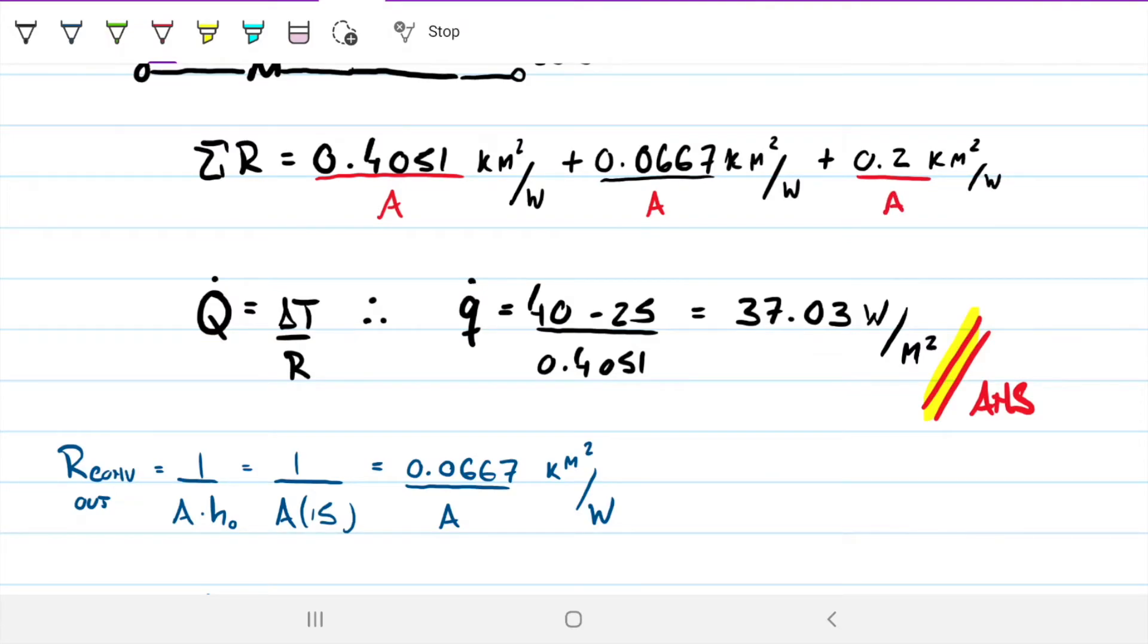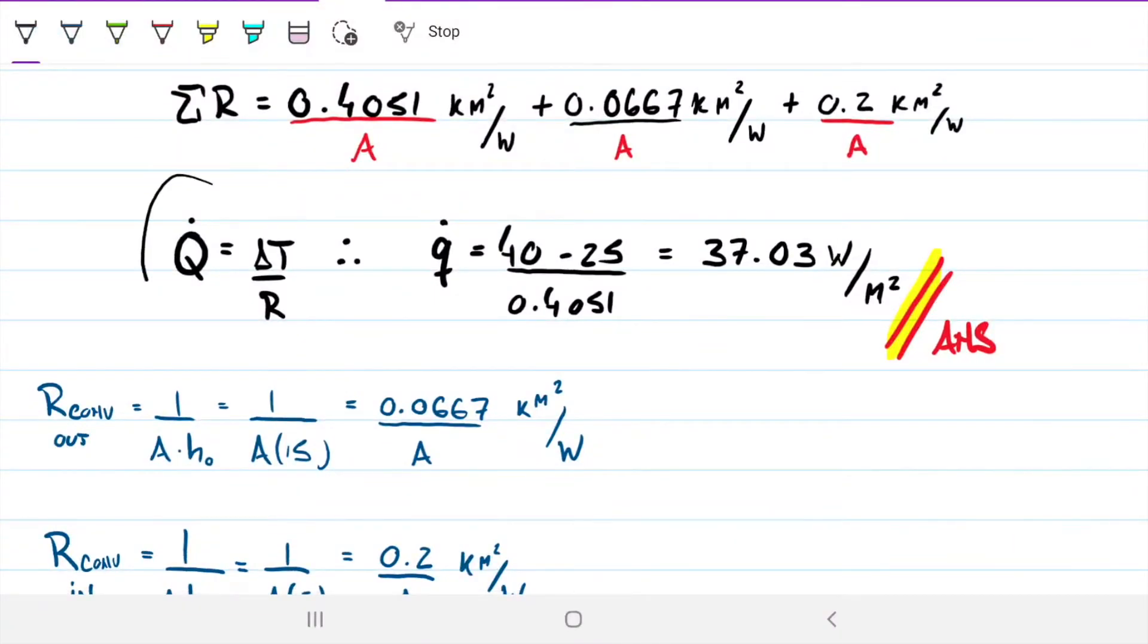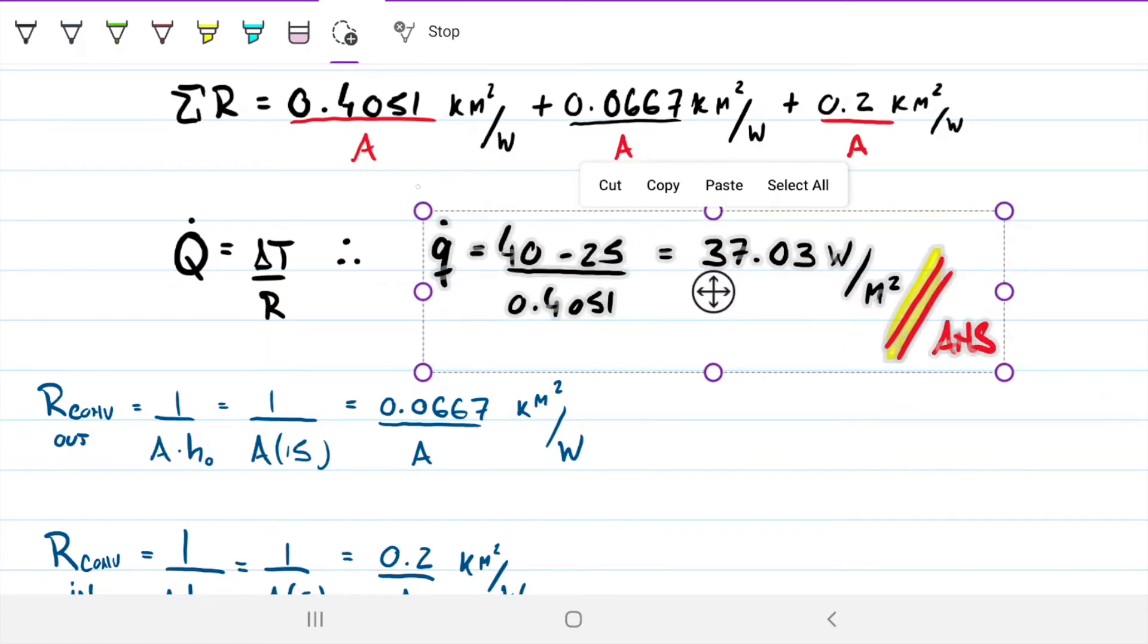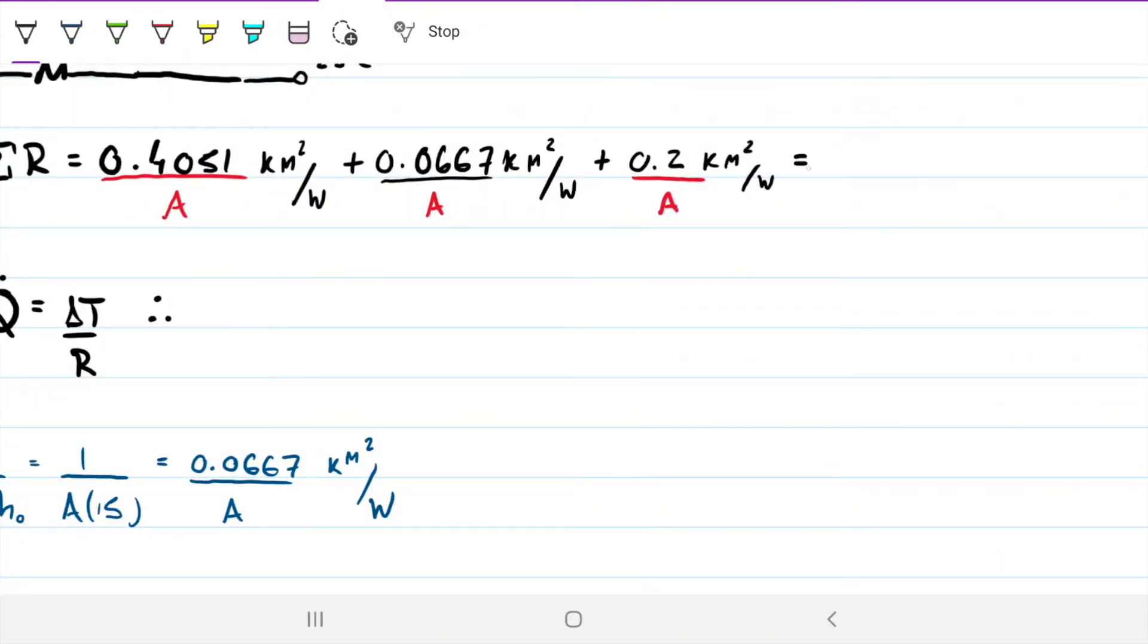When we sum them up the area is still there dividing and our area is whatever area we wish. When we go to apply the analogy with the electric circuit, we have R - it's the sum of all these guys but still per area. So if we sum all this we get about 0.6719 divided by the area, whatever area we wish.